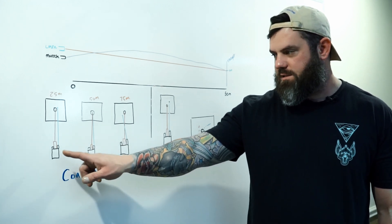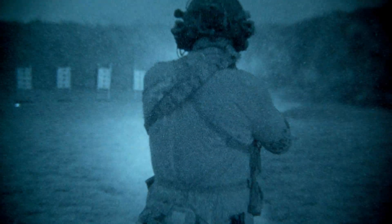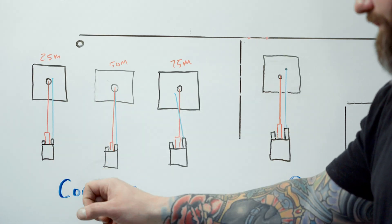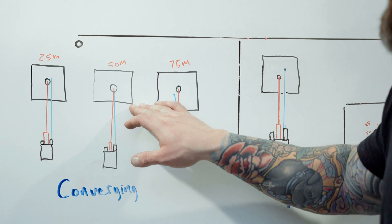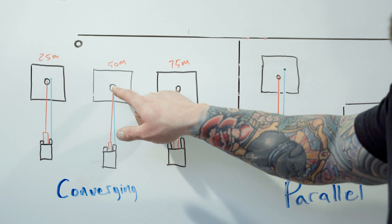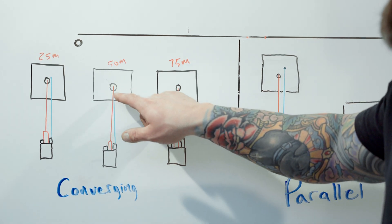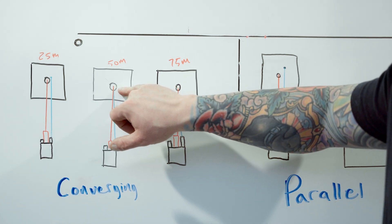For instance, this red line is going to be the path of the projectile, and this green line is going to be the laser and where it falls on the target. So if we do a converging zero at 50 meters, the bullet, your projectile is going to hit point of aim, point of impact. The laser is also going to land on the target in the same point.